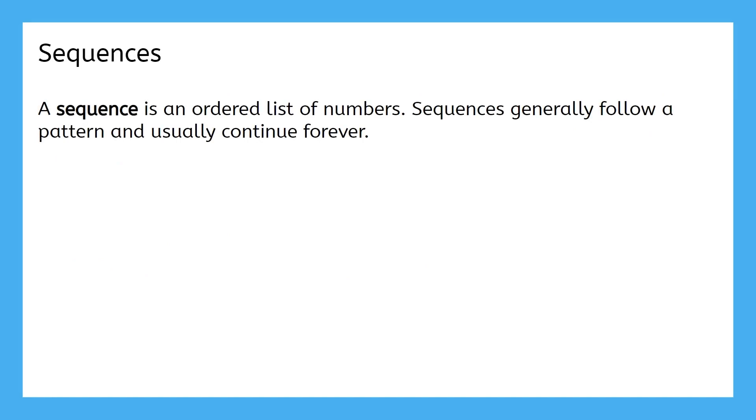A sequence is an ordered list of numbers. Sequences generally follow a pattern and usually continue forever. Here's a few examples of sequences. One, three, five, seven, nine. Can you identify the pattern? What would be the next number in this sequence?